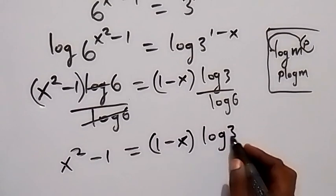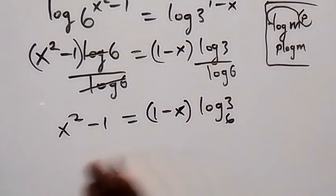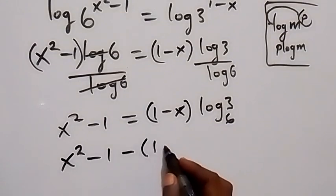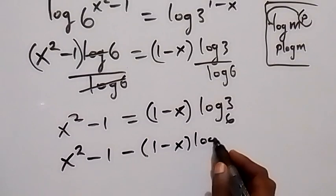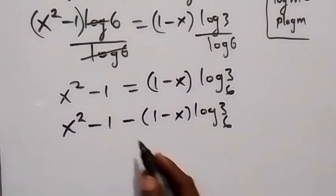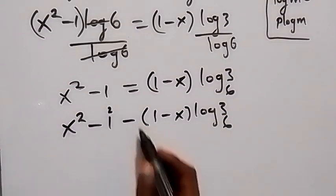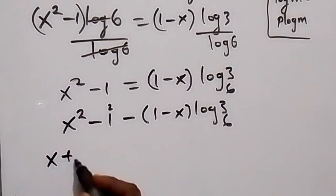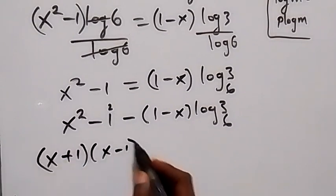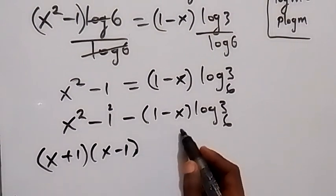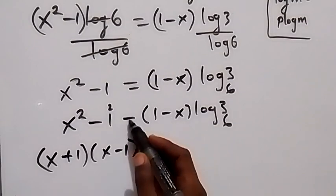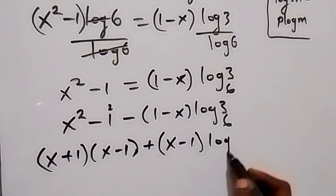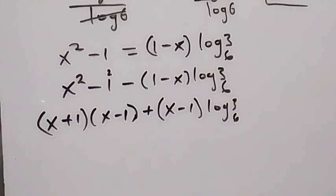We have x squared minus 1 minus bracket 1 minus x times log 3 base 6 equals zero. Let's take everything to one side. Applying the difference of two squares, x squared minus 1 can be written as x plus 1 times x minus 1. Rewriting the second term, minus into bracket 1 minus x becomes plus into bracket x minus 1 times log 3 base 6.